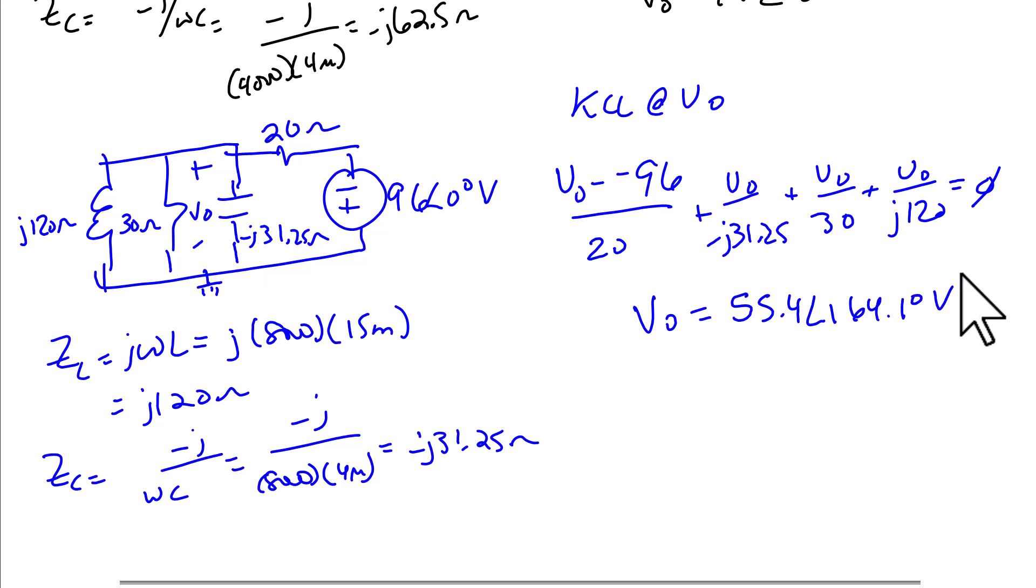Now, note that when we do superposition, we cannot add these values together in the frequency domain because they were found at two different frequencies. We must write the answer in the time domain. So the final answer is V0 of T is equal to 55.4 cosine 8000 T plus 164.1 degrees plus 48 cosine 4000 T minus 36.5 degrees. And the units are volts.